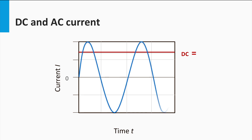AC, or alternating current, on the other hand, is the flow of electric charge such that it constantly reverses directions. The usable form of an AC power is a sine wave. The symbol for AC signal is this. As a thought, DC signals can be looked upon as a signal with zero frequency.